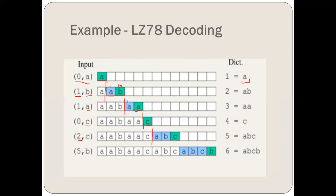For 2,C: position 2 in the dictionary is AB, so we output A, B, and then next character C. For 5,B: at position 5 we have ABC, so we output A, B, C and then the next character B. This is how we do decoding in LZ78 — a very simple process. I hope you have understood the LZ78 encoding and decoding procedure and will be able to do it on your own. Thank you very much.